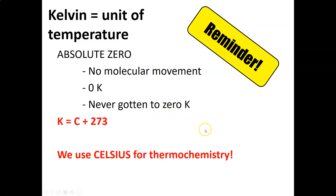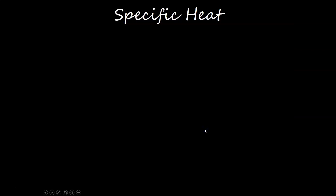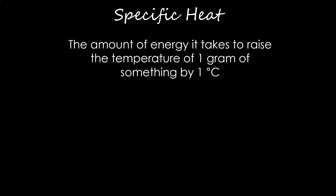Moving on — the more official definition of specific heat is the amount of energy it takes to raise the temperature of one gram of something by one degree Celsius. If I have a metal cube that weighs one gram and I want its temperature to go up one degree, I measure how much energy that takes. That describes how much energy the material can hold on to before the molecules start moving so much that the temperature goes up.